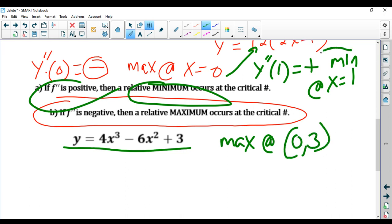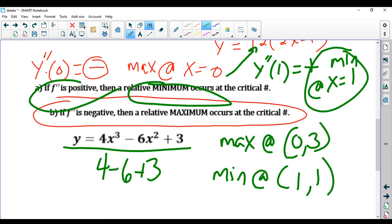When you plug in the 1, which is where a minimum occurs, you'll get 4 - 6 + 3. That's not too bad. That's negative 2 plus 3, which is 1. Again, we have a max at (0, 3) and a minimum at (1, 1).